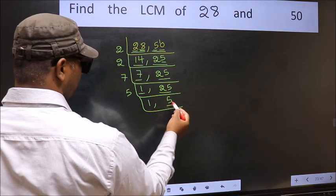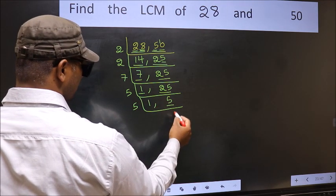Now we have 5. 5 is 5, 5 is a prime number, so 5 once 5.